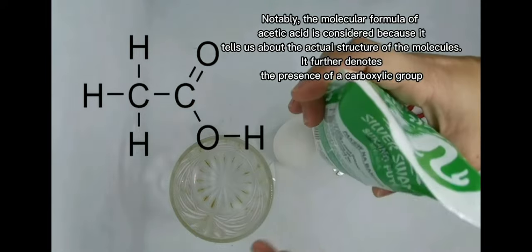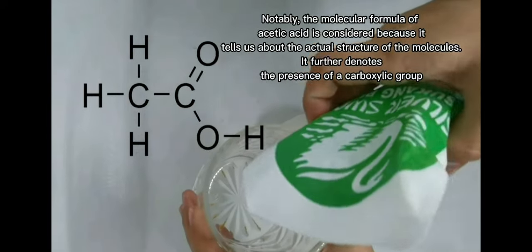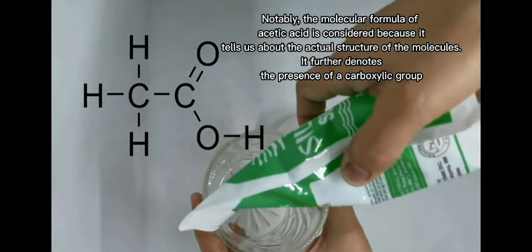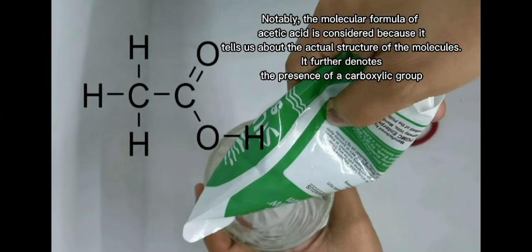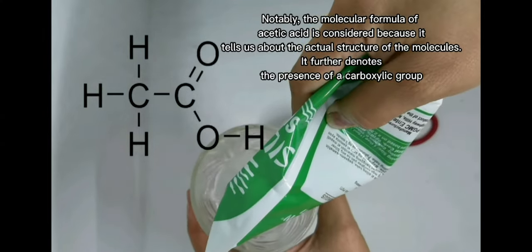Notably, the molecular formula of acetic acid is considered because it tells us about the actual structure of the molecules. It further denotes the presence of a carboxylic group.